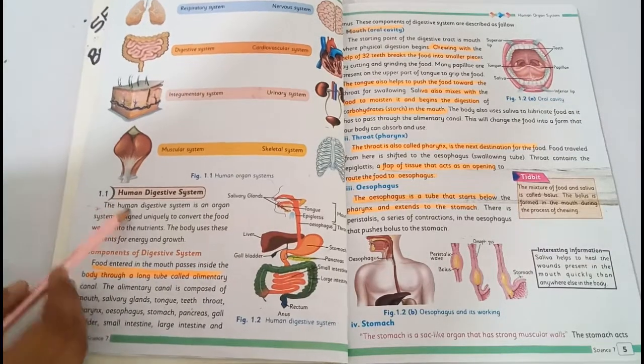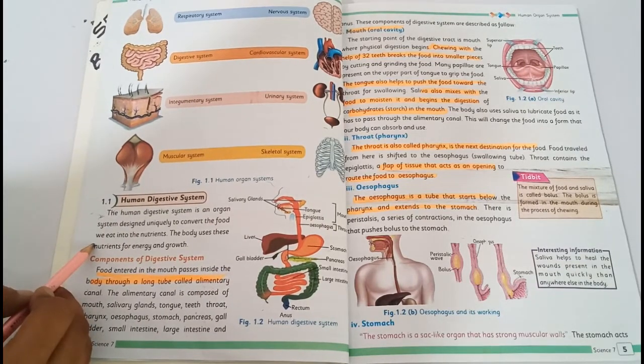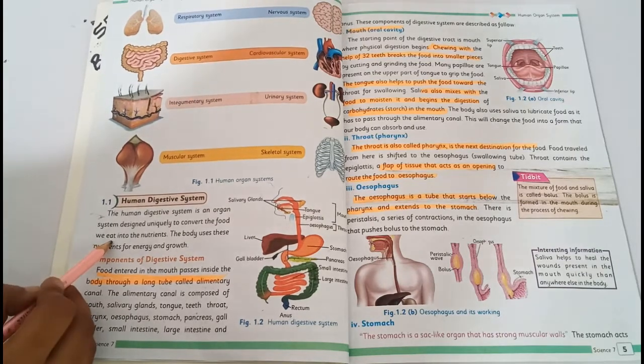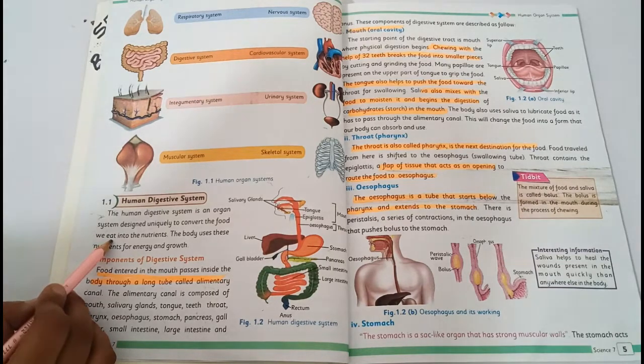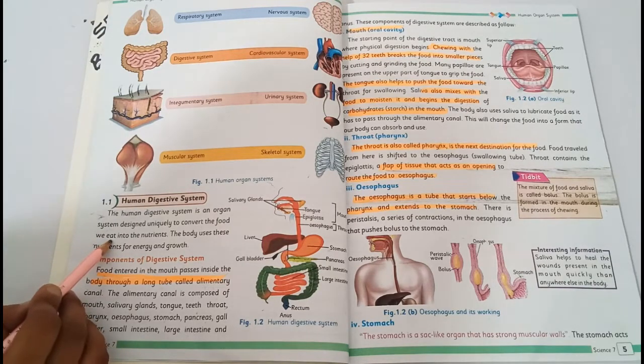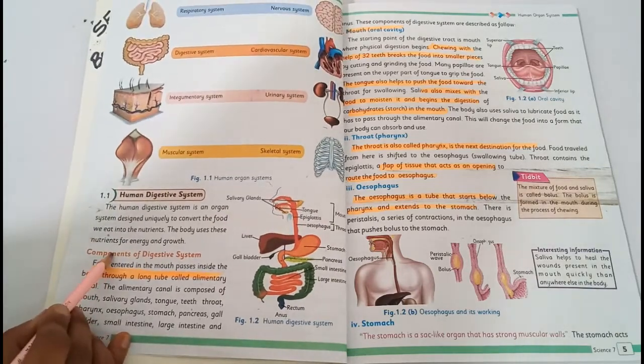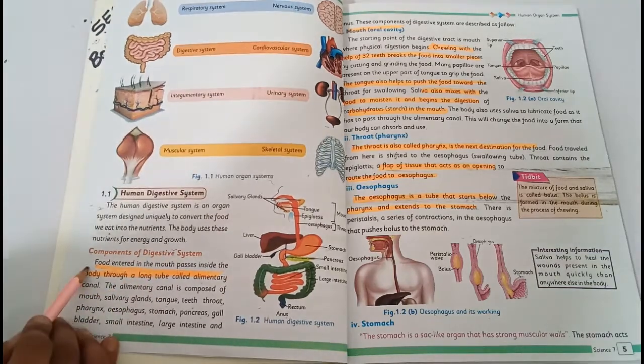Human digestive system is an organ system designed uniquely to convert the food we eat into nutrients. It converts food into smaller pieces and extracts nutrients into your blood, providing energy to our body.